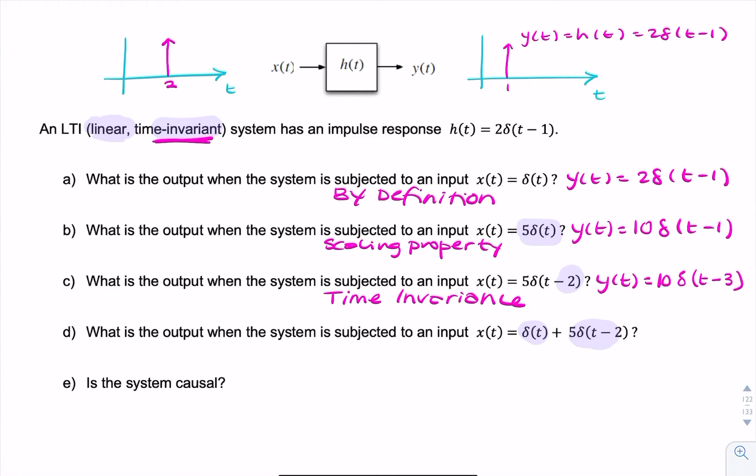Because it's a linear system, we know from the question, when we add different combinations of inputs, we can simply add the outputs. So I can take the output from A here, and I can take the output from C, and I can add them together.